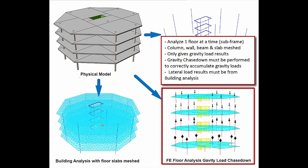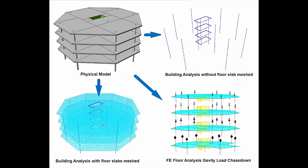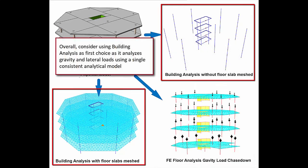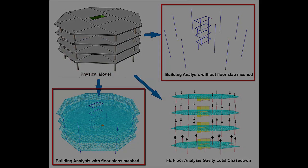For example, FE floor analysis may be useful to analyze and design slabs by meshing of one particular story, as slab design is usually designed only to gravity loads. Overall, we recommend you always use building analysis method as the first preference, as it analyzes gravity and lateral loads using a single consistent analytical model.